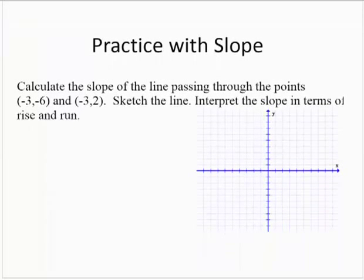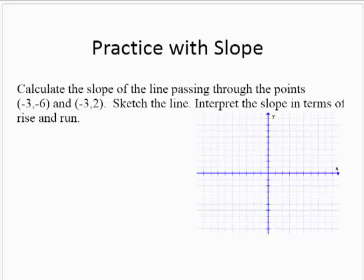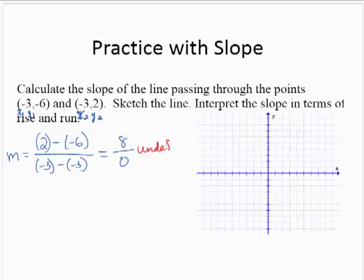Let's see one more example. Same basic idea, through the points (-3, -6) and (-3, 2). (-3, -6) would be my x1, y1. (-3, 2) would be my x2, y2. So then the slope m would be given by 2 minus -6 over -3 minus -3. 2 subtract -6 is 2 add 6, which is 8. -3 subtract -3 is -3 add 3, which is 0. And 8 divided by 0 is undefined. So this line has undefined slope.